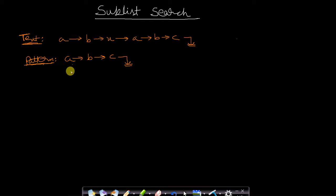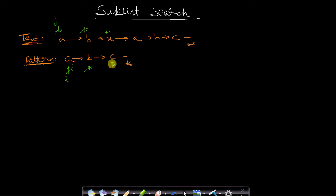In the brute force method we have two pointers, pointer i and pointer j. We compare the first element of both the text and pattern. If they match, we move both pointers. When a mismatch occurs — for example c and x are not matching — we reset pointer i to the starting position and reset j to the next location from where we had started searching in the previous search.